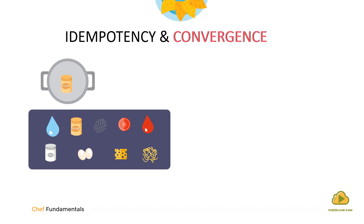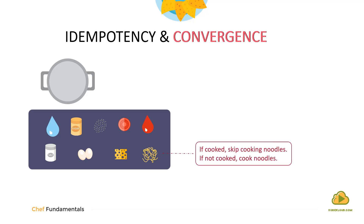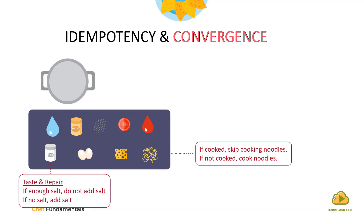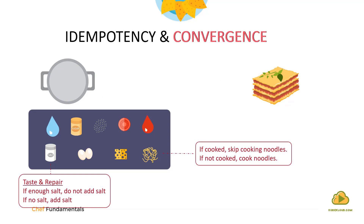Now let us move on to convergence. The term convergence means to bring together — in this case, bringing together a set of ingredients to cook a dish. However, each step in the process may be an idempotent action. The dish requires cooked noodles: if the noodles are already cooked, skip that part; if not, cook them first. While adding salt, taste to see if there is enough already; if not, add the required amount. By the end of the process, we always get the same lasagna that always tastes the same, with the right amount of ingredients.